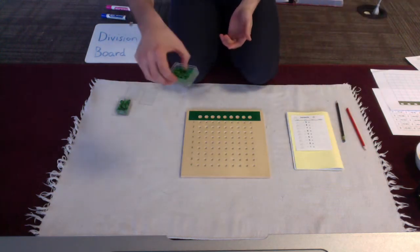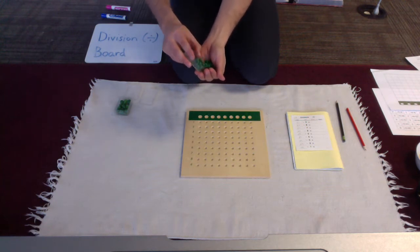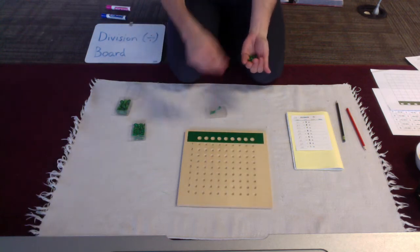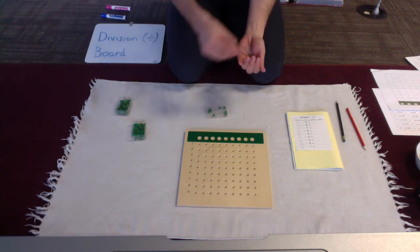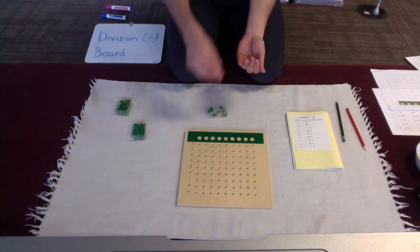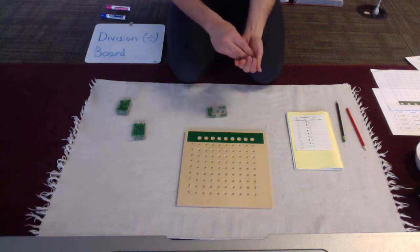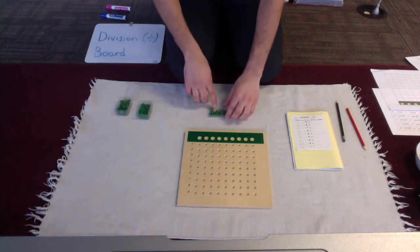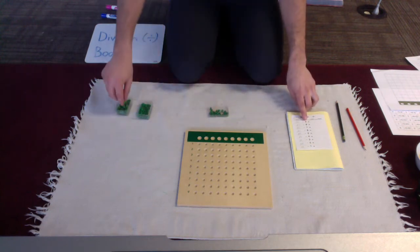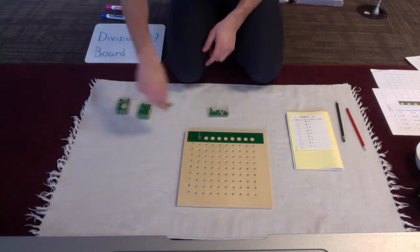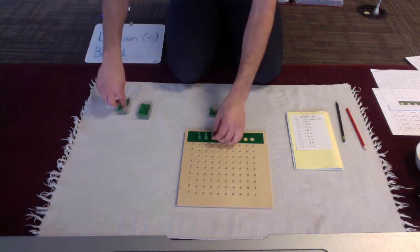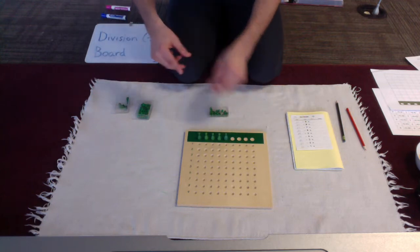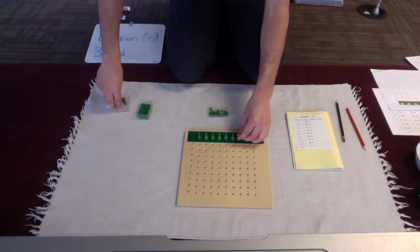Now the first step I need to do is I need to count out 24 units. So I'm going to put the ones I'm going to use directly in here. [Counting 1 through 24]. And once I have completed that, then I will start my division.